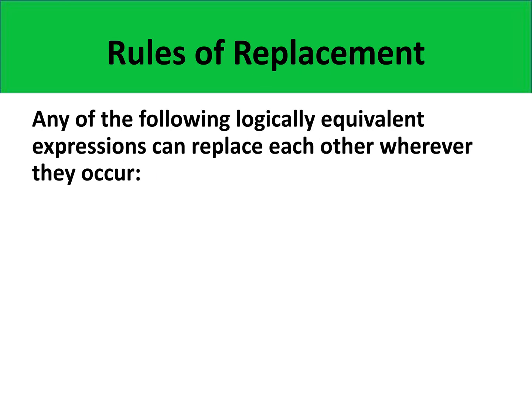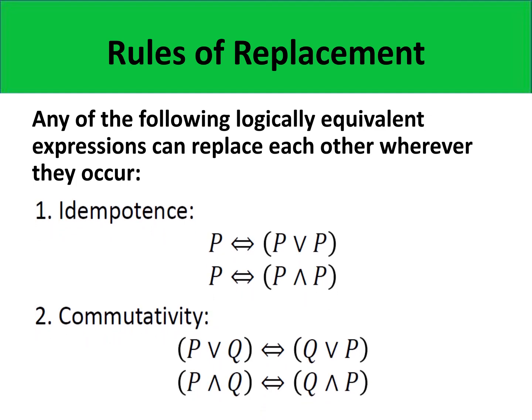The rules of replacement show logically equivalent expressions or tautological propositions. When we say tautological propositions, if you create the truth table of the given rule of replacement, you will discover that it is a tautology — all the final truth values would be true. The first rule is idempotence, which states that P is logically equivalent to P or P. The second is commutativity: P or Q is equivalent to Q or P, meaning you can always interchange the propositional variables.